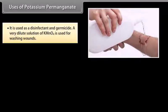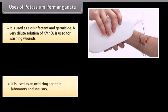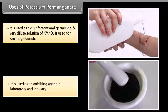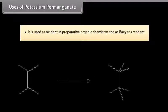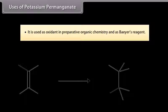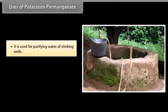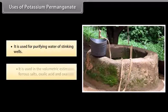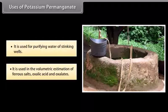The important uses of potassium permanganate are as follows: it is used as a disinfectant and germicide, with a very dilute solution used for washing wounds. It is used as an oxidizing agent in laboratory and industry, as an oxidant in preparative organic chemistry, and as Baeyer's reagent. It is used for purifying water of stinking wells, and in volumetric estimation of ferrous salts, oxalic acid, and oxalates.